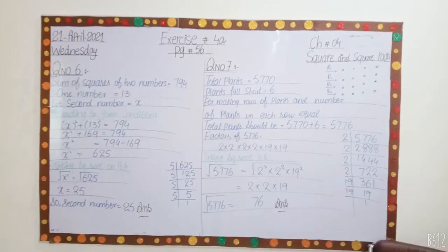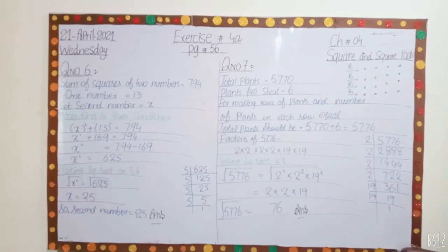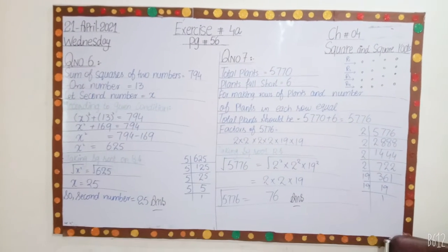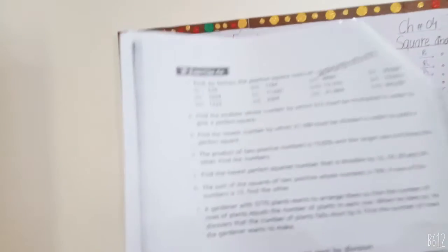Chapter number 4, square and square roots, exercise 4a page number 56, question number 6.